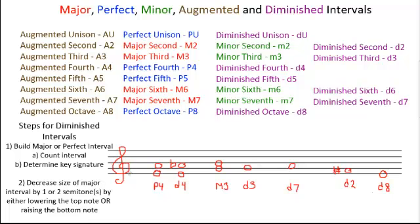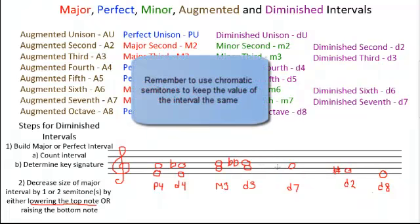For the major third, we're going to lower it by two semitones, because major thirds lowered by one become minor thirds, and lowered by two become diminished. We're only changing the top note, because we're doing ascending intervals. So going from B, one semitone lower is B flat, and two semitones lower is B double flat. We write the double flat by writing two flats next to the note. That's now been lowered by two semitones, giving us a diminished third.